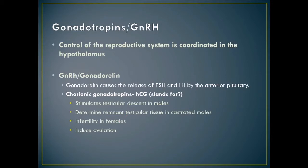Gonadotropins: gonadotropin-releasing hormone, also known as gonadorelin, causes the release of FSH and LH by the anterior pituitary. Chorionic gonadotropins such as HCG — human chorionic gonadotropin — are produced in pregnant females.